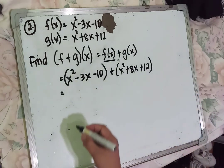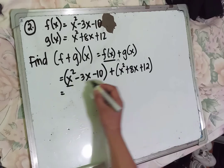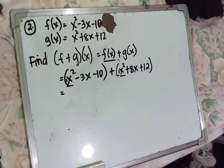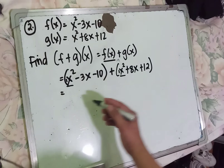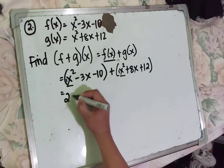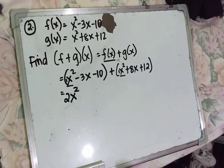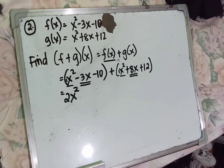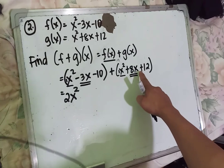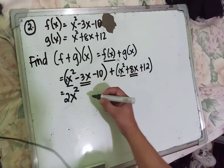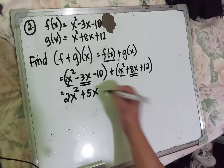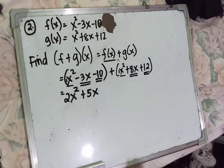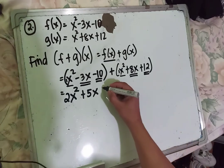Same variable and same exponent: x squared plus x squared — the numerical coefficient is 1 and 1, so 1 plus 1 equals 2, giving 2x squared. Then negative 3x plus 8x: negative 3 plus 8 equals 5, giving 5x. Next, negative 10 plus 12 equals 2.